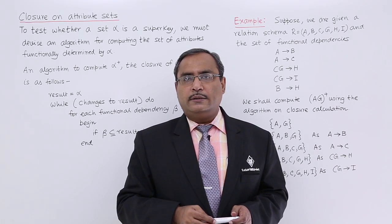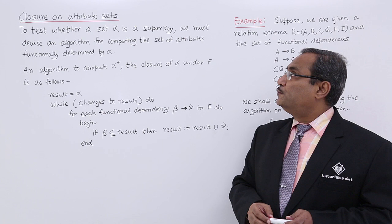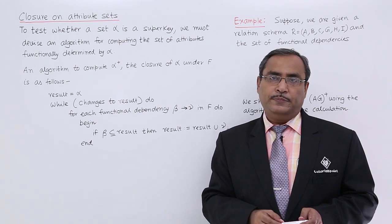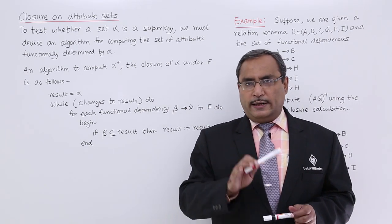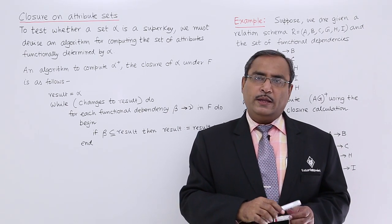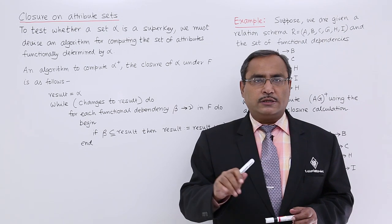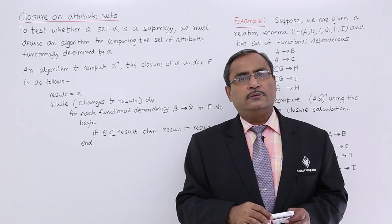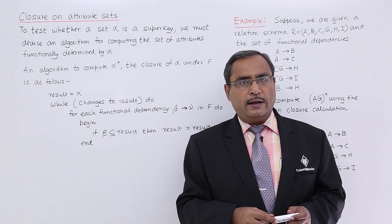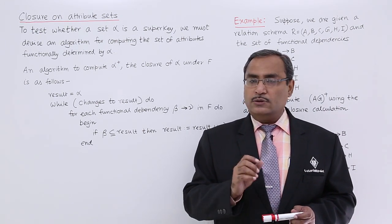We are going to discuss a very important topic: closure on attribute sets. To test whether a set alpha is a super key, we must devise an algorithm for computing the set of attributes functionally determined by alpha. Alpha is nothing but a set of attributes. A super key is a combination of one or more attributes with which we can determine the values of all other attributes in the relation.